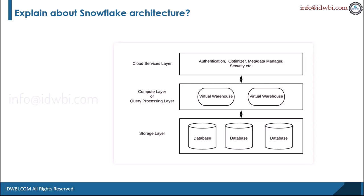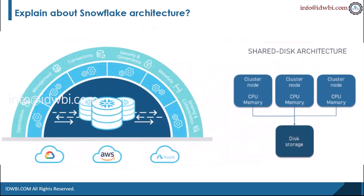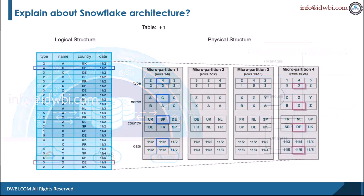Snowflake organizes data into multiple micro-partitions that are internally optimized and compressed. It uses a columnar format to store that data. This data is stored in cloud storage and works as a shared disk model, which provides simplicity in data management.